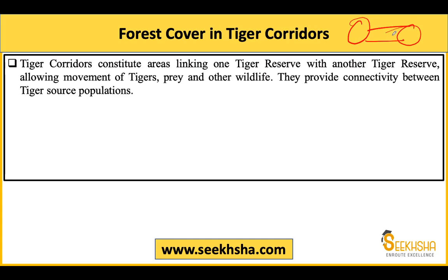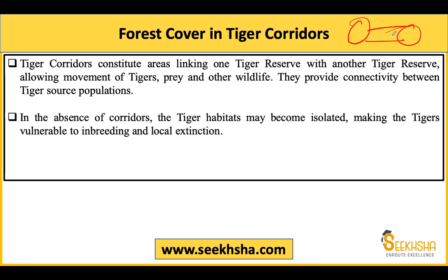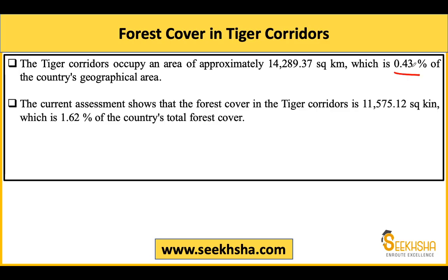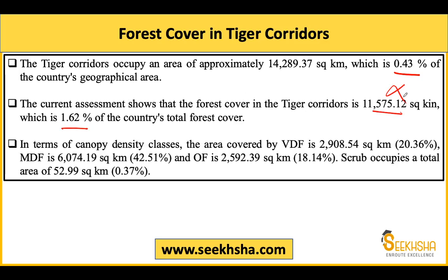Tiger corridors - ek tiger reserve se doosre tiger reserve ko connect karte hain. Agar yeh corridors na hon toh jungle ke share ko aap baant nahi sakta, woh band ho jayega aur tiger vulnerable ho jaata hai. Tiger corridors total geographical area ka around 0.43 percent area cover karte hain, aur jo forest cover hai woh total forest cover ka 1.62 percent hai. Density ki baat karein toh sabse zyada jo type hai woh medium dense forest hai tiger corridors ke andar - 42.51 percent.